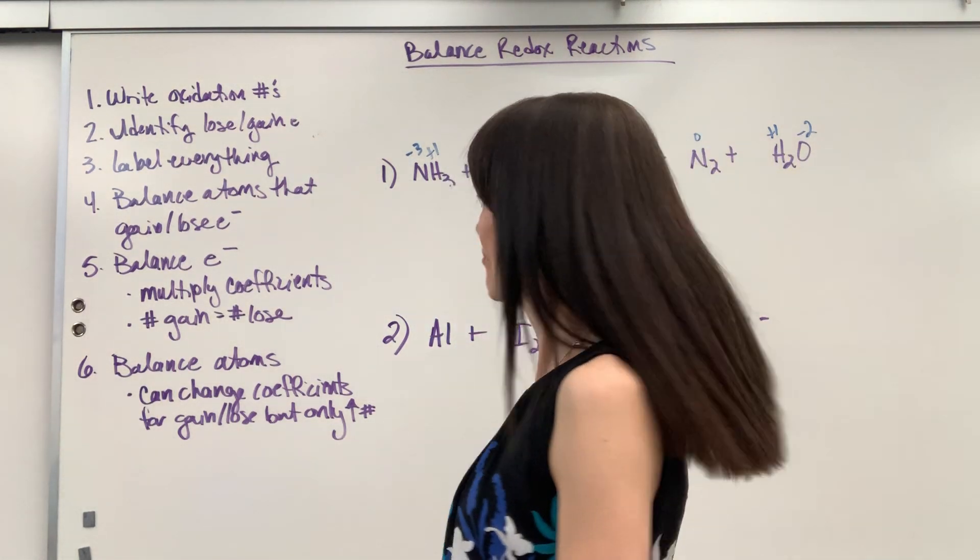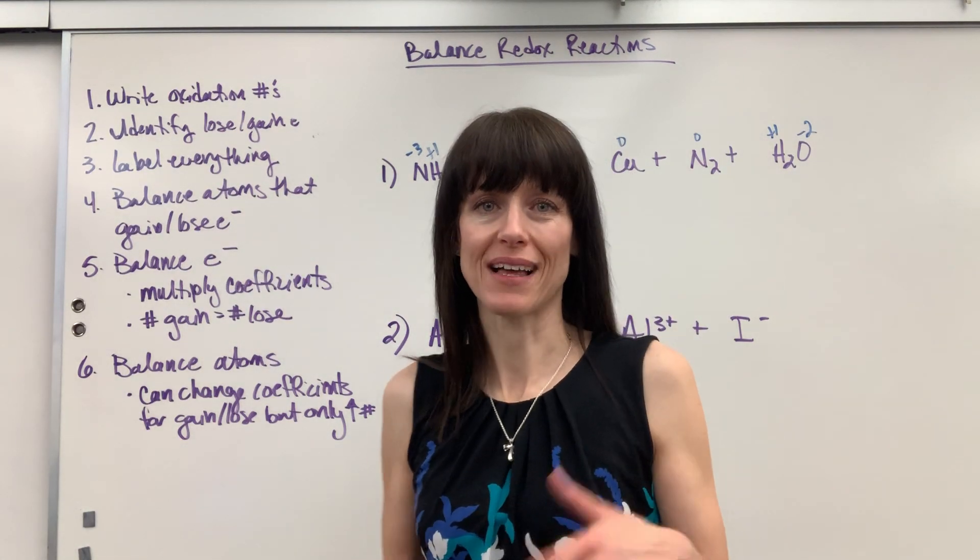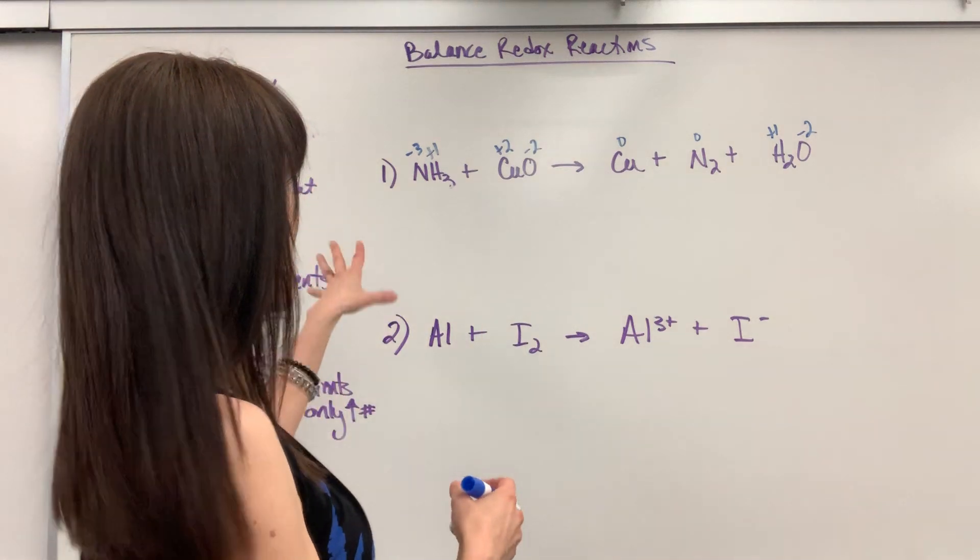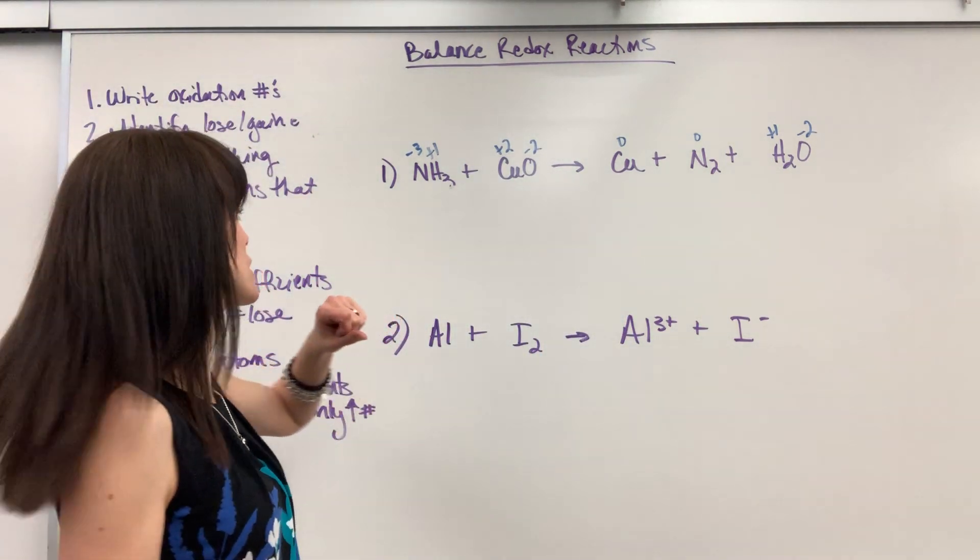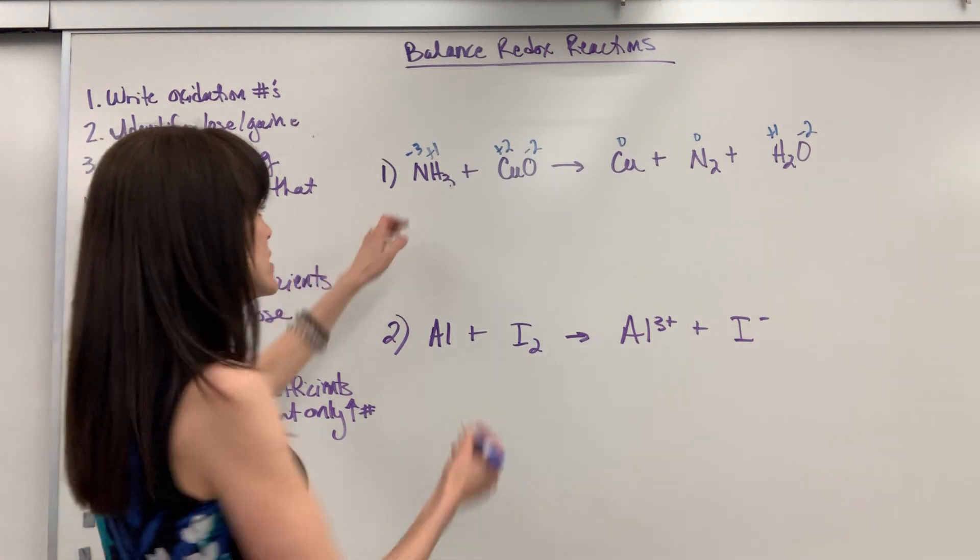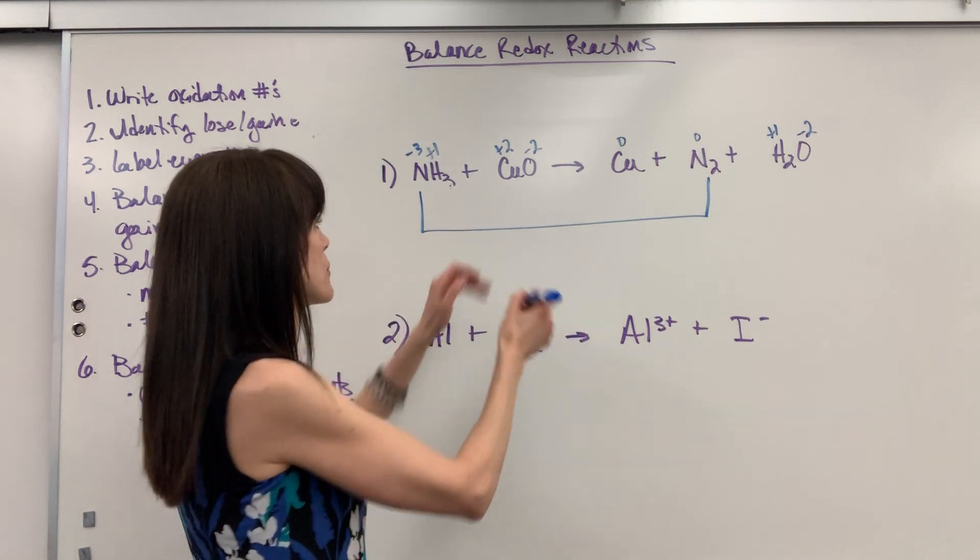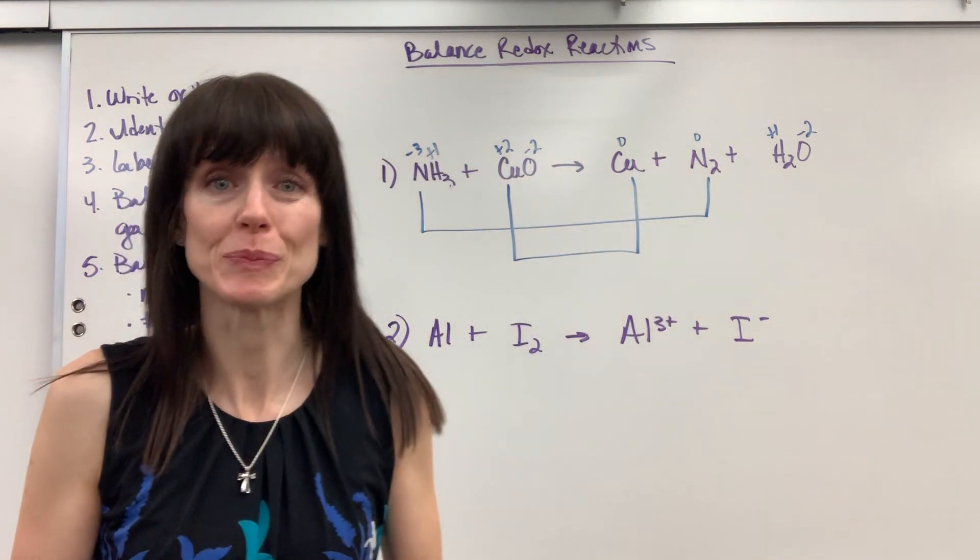So you have our oxidation numbers. Now we want to identify what gains and what loses electrons. For this you just stand back and look, comparing reactants to products, and you're looking for a change in oxidation number. Notice the nitrogen is going from a minus three to a zero and the copper is going from a plus two to a zero. So we found our two species.